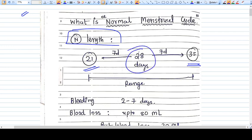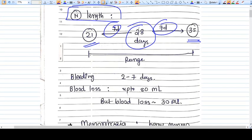To remember this, if we take 28 days as the center point, 7 days before that and 7 days after that, we get the range of normal length for a menstruation cycle.